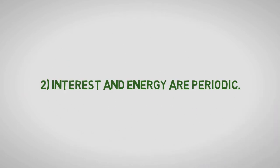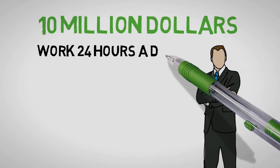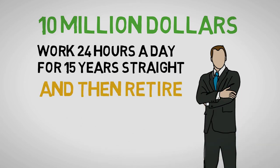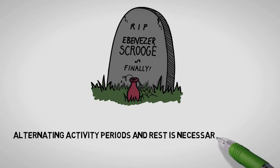Interest and energy are periodic. If someone offered you 10 million dollars to work 24 hours a day for 15 years straight and then retire, would you do it? Of course not. You'd be dead in no time. Alternating activity periods and rest is necessary to survive.